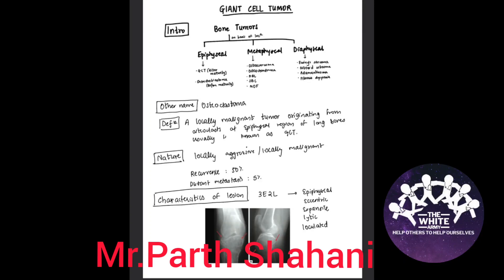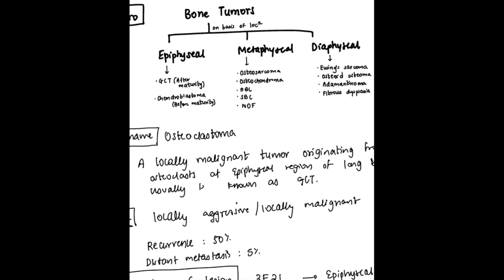This is a very important topic starting with the introduction to bone tumors. On the basis of location, they are divided into epiphyseal, metaphyseal, and diaphyseal. In epiphyseal tumors, there are two: first is GCT, that is giant cell tumor after maturity, then chondroblastoma which comes before maturity. Metaphyseal tumors include osteosarcoma, osteochondroma, aneurysmal bone cyst, simple bone cyst, and non-ossifying fibroma.